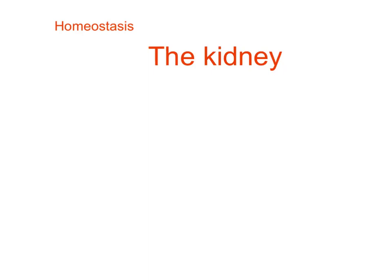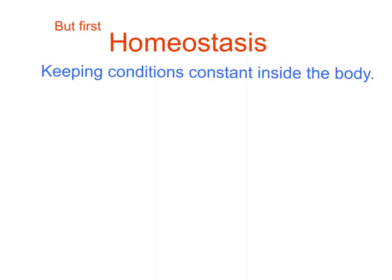Hello and welcome to this lesson on the kidney. I'm going to quickly go over a bit about homeostasis first and a little bit about the composition of blood, because both of those things are really important to get your head around how the kidney works. None of that will be new but it will help you get it all in context. Homeostasis is something we dealt with back in year 10 — it just means keeping conditions constant inside the body.